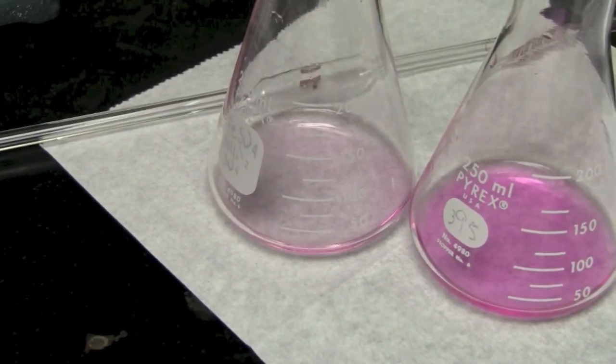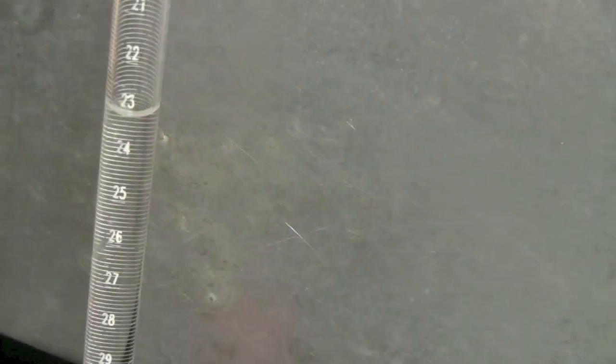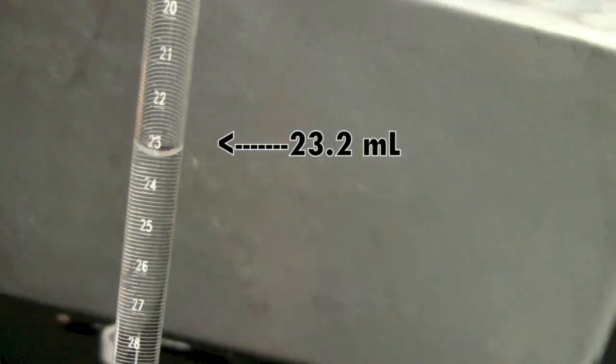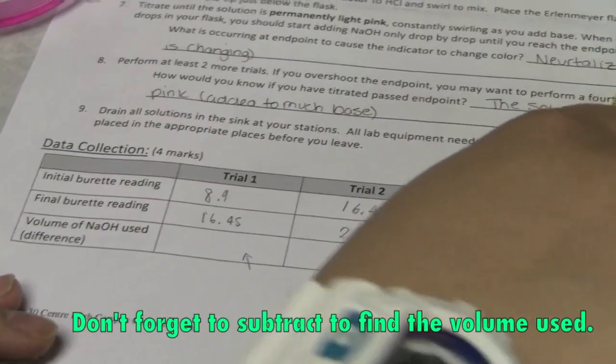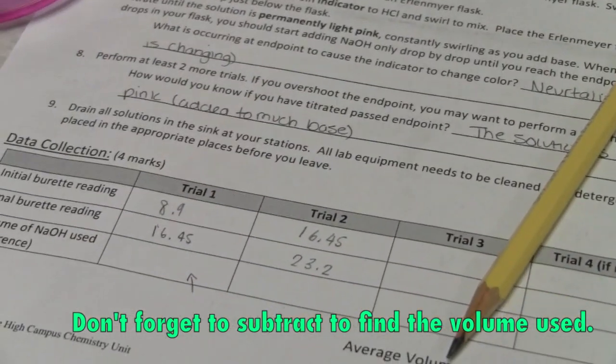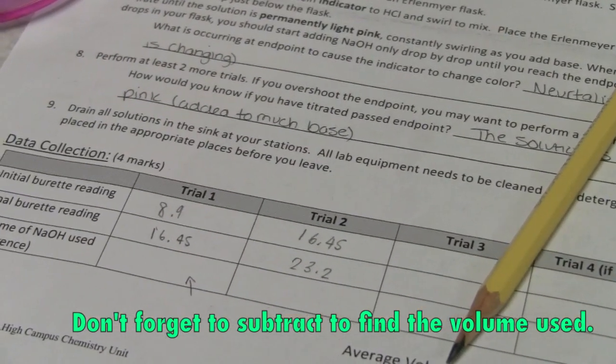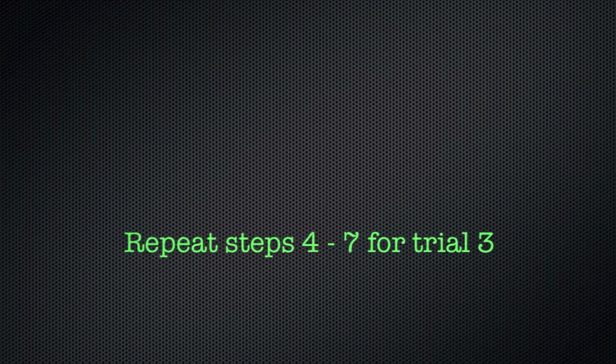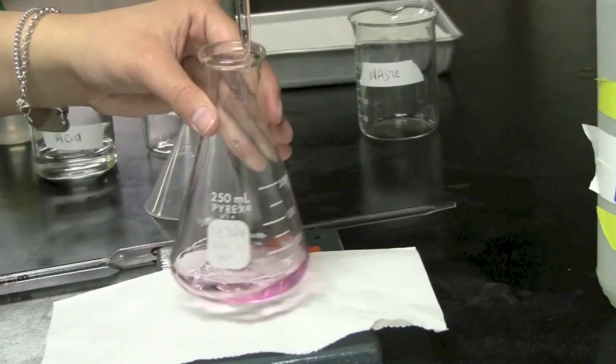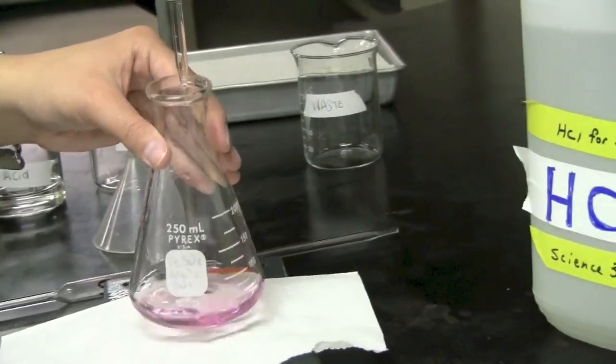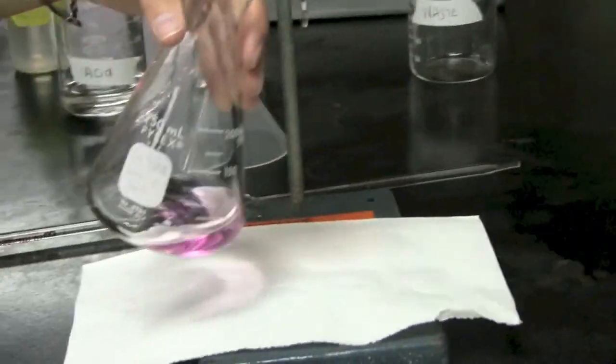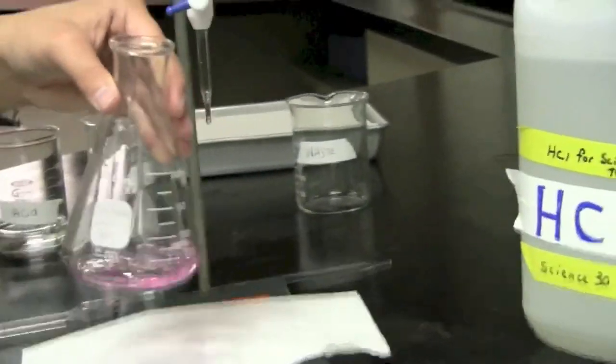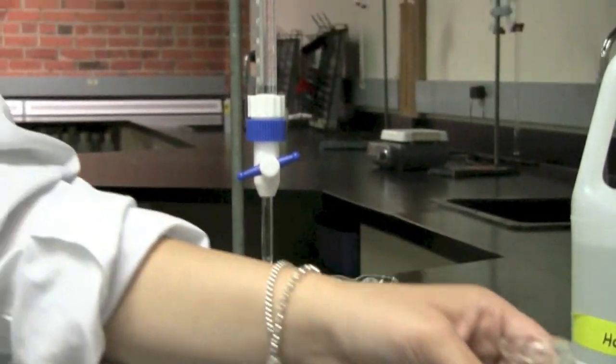So let's take a look at our burette measurement. So make sure you're at eye level when you're reading this. It's 23.2. You can see that it's already at a very light pink color and all we have to do is take the measurement of our burette. 29.9.